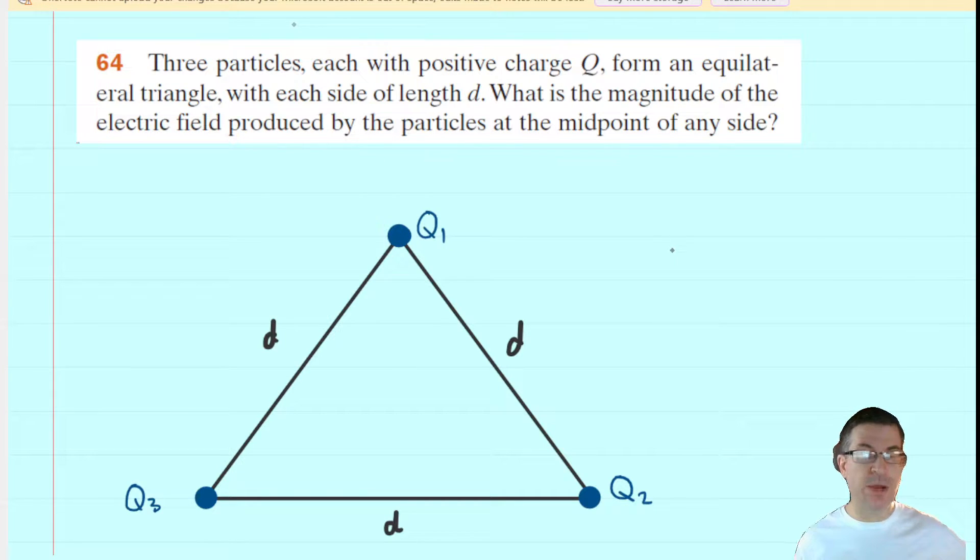We've gone ahead and drawn an equilateral triangle, and at each vertex of that triangle, we have placed a positive charge Q. We've labeled them Q1 through Q3, just so that we can later keep track of the three different electric fields. In addition, we have the side lengths labeled d.